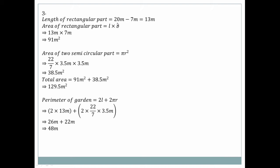The shape described has length 20 to 7 and length of 13 meters. The area of the rectangular path = L × B = 13 meters × 7 meters = 91 square meters.